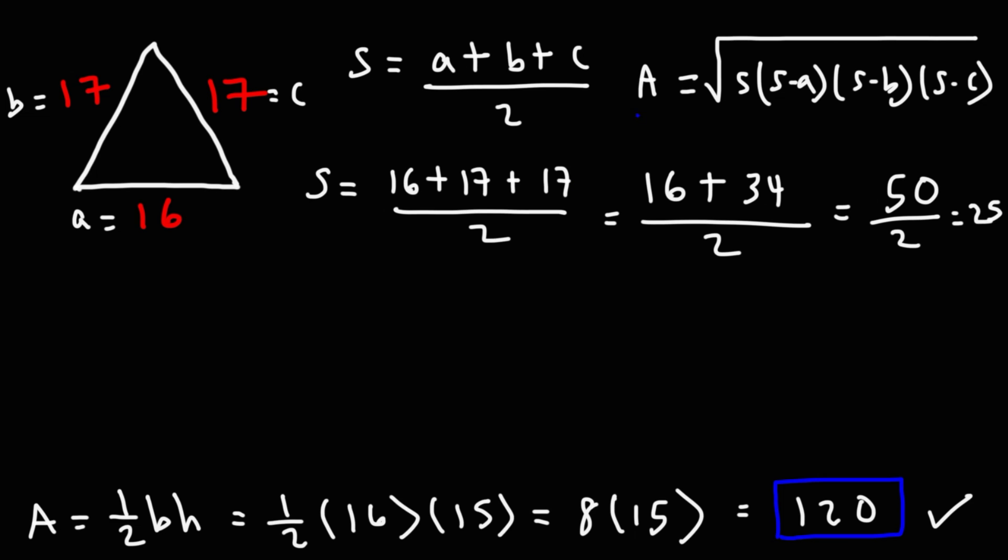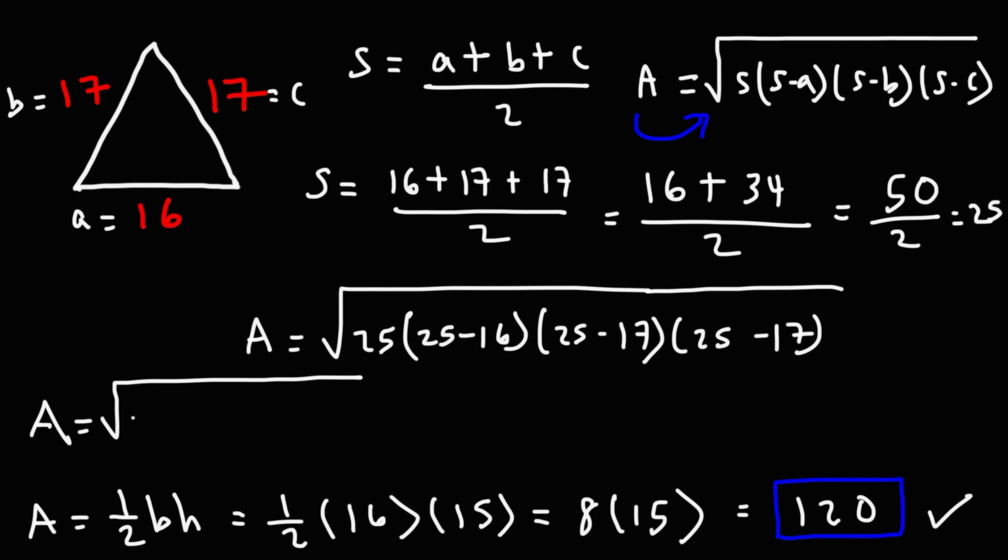Now that we know the value of s, we can use this formula to get the area. So, we have the square root of 25, and then it's 25 minus a. a is 16. 25 minus b. We know b is 17, and so is c. Now, 25 minus 16, that's going to be 9. 25 minus 17 is 8. And we have two of them.